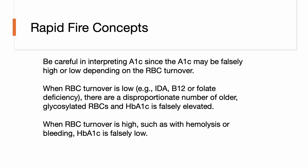Be careful in interpreting A1c, since hemoglobin A1c may be falsely high or low depending on RBC turnover. When RBC turnover is low — such as with iron deficiency, vitamin B12 deficiency, or folate deficiency — there are a disproportionate number of older glycosylated RBCs and the hemoglobin A1c will be falsely elevated. When RBC turnover is high, such as with hemolysis or bleeding, hemoglobin A1c may be falsely low.